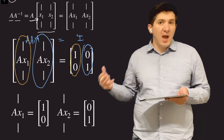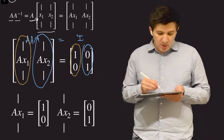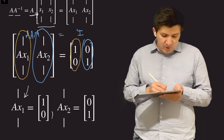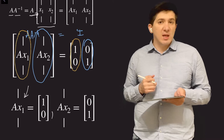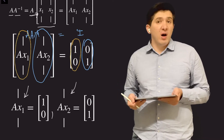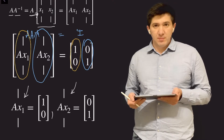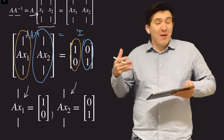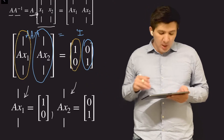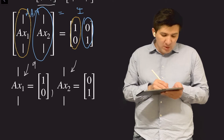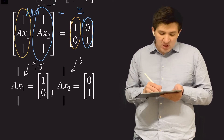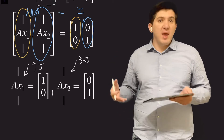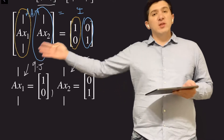So I need to solve two systems of linear equations to find the two columns of the inverse matrix. Fortunately, it is possible to perform Gauss-Jordan elimination only once to solve both systems simultaneously.